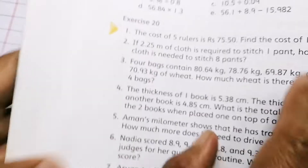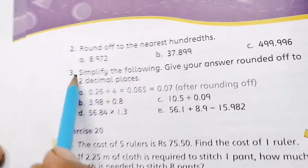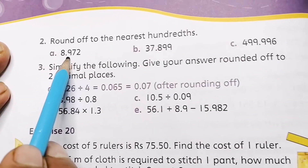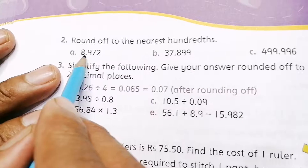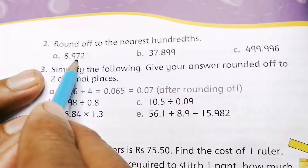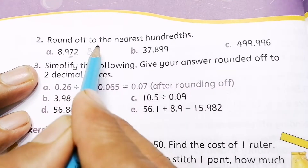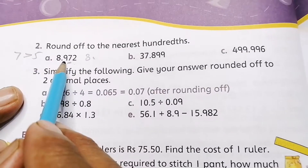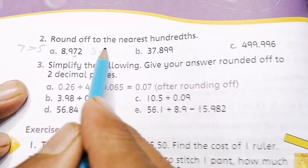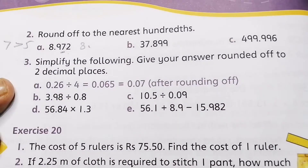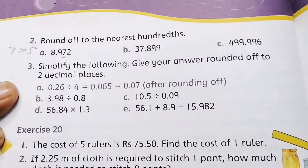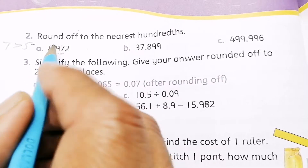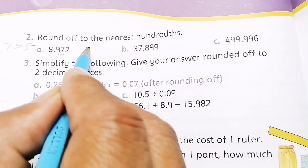Question 2 on page 76: round off to the nearest hundredth. For 8.972, the digit at the hundredth place is 7. The thousandth digit is 2, which is less than 5, so there is no change — you write 8.97. Wait, 2 is less than 5, so 7 stays. The digit at the thousandth place determines: since it's less than 5, write 8.97.